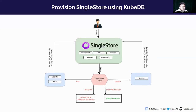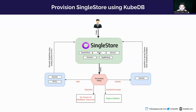Now we are going to look at what KubeDB offers and how KubeDB manages the provisioning of SingleStore on your public or private Kubernetes cluster. First, the user has to create a SingleStore custom resource. The KubeDB provisioning operator continuously watches SingleStore custom resources and creates the SingleStore cluster, including necessary Kubernetes components like StatefulSets, persistent volume claims, secrets, services, and AppBinding.